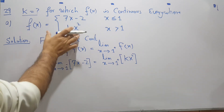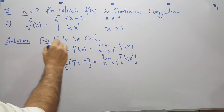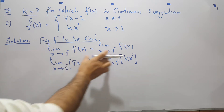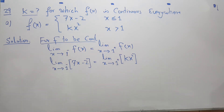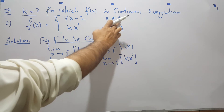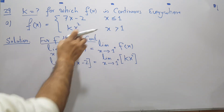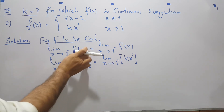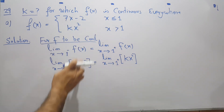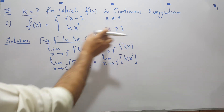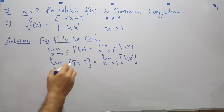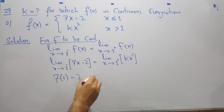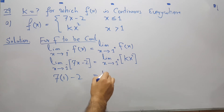We know the definition of continuity. For any given function to be continuous, we know that the left hand limit and the right hand limit must be the same. So we write down the left hand limit approaching 1 and the right hand limit approaching 1, then substitute the values: f of x on the left hand side is one function and on the right hand side the function is kx squared.